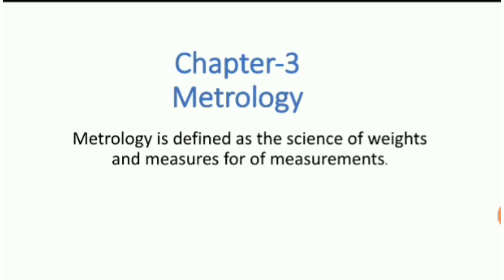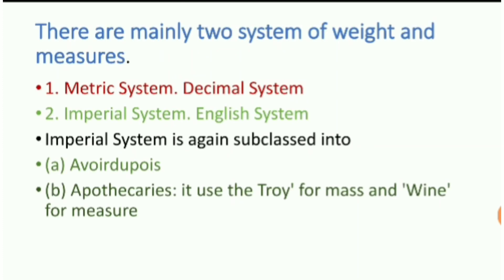Today we are going to start the metrology chapter. After watching this video you will be able to understand what is metrology, what is the imperial system, and what is the metric system. Metrology is defined as the science of weight and measures for measurement. There are mainly two systems of weight and measurement: the first one is the metric system or decimal system, and the other one is the imperial system or English system.